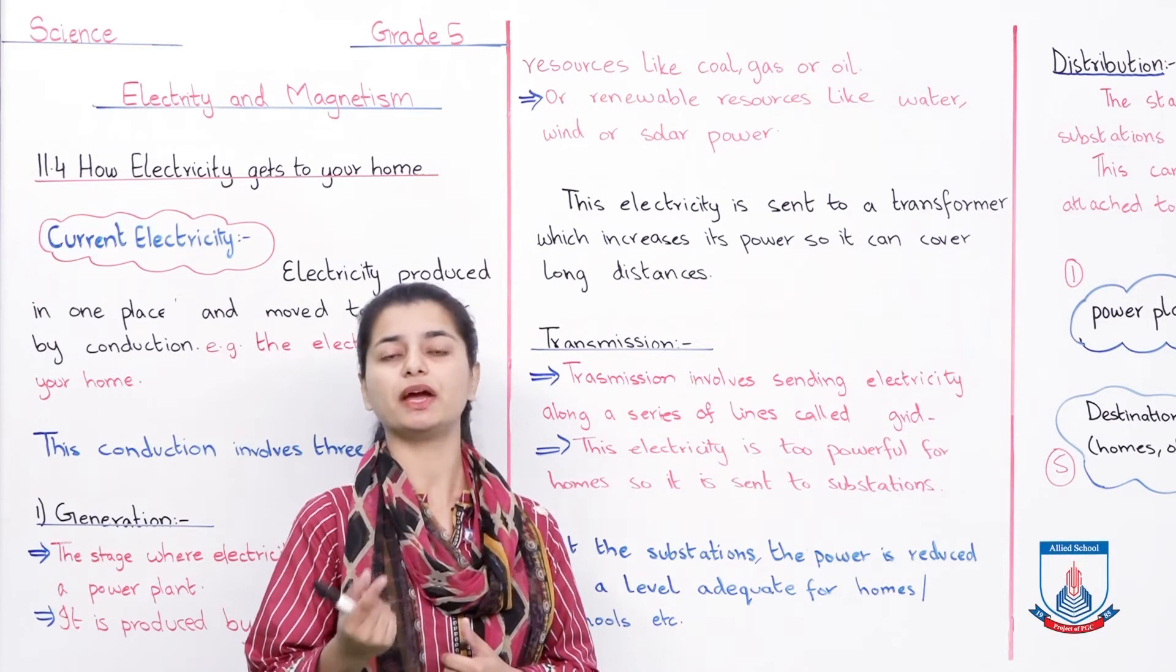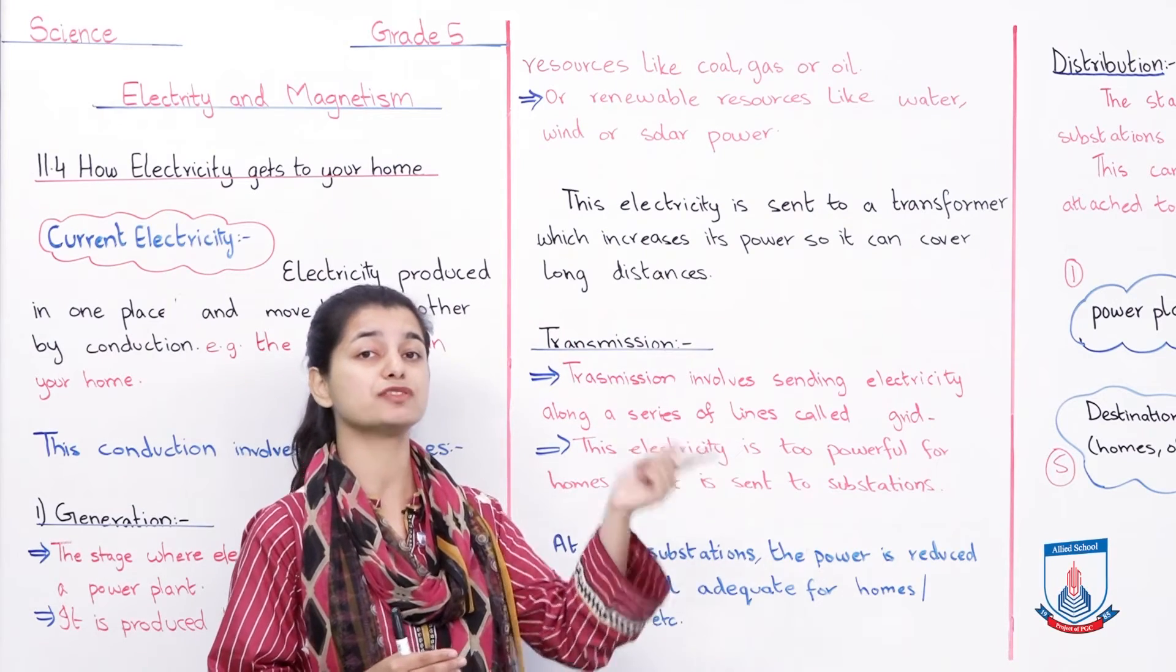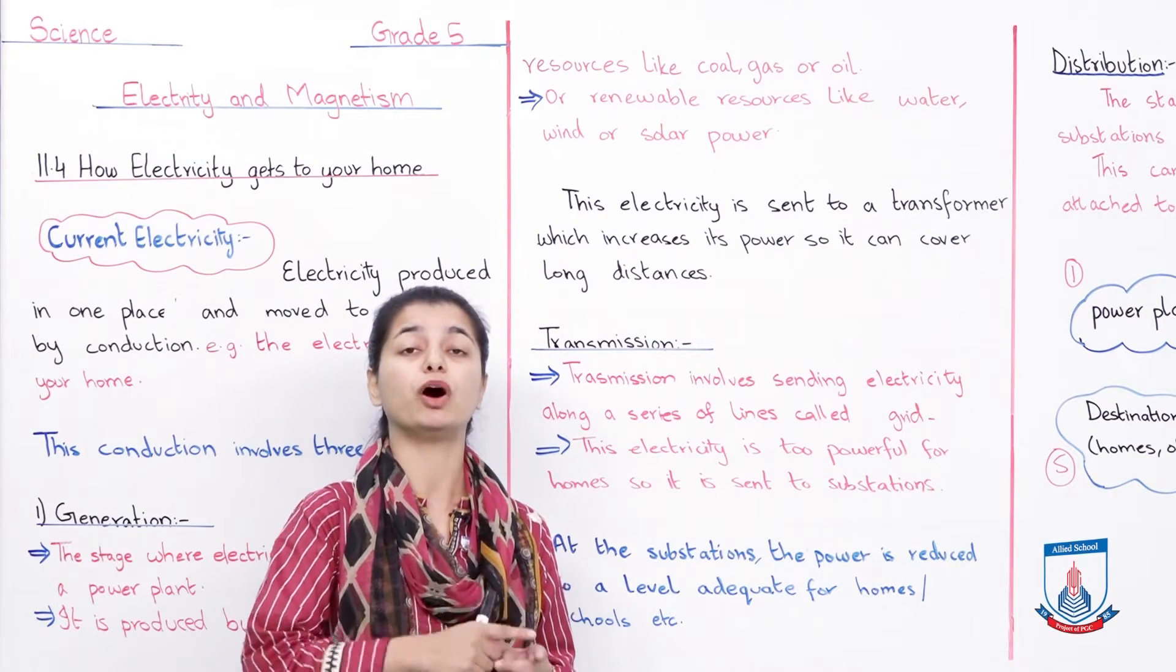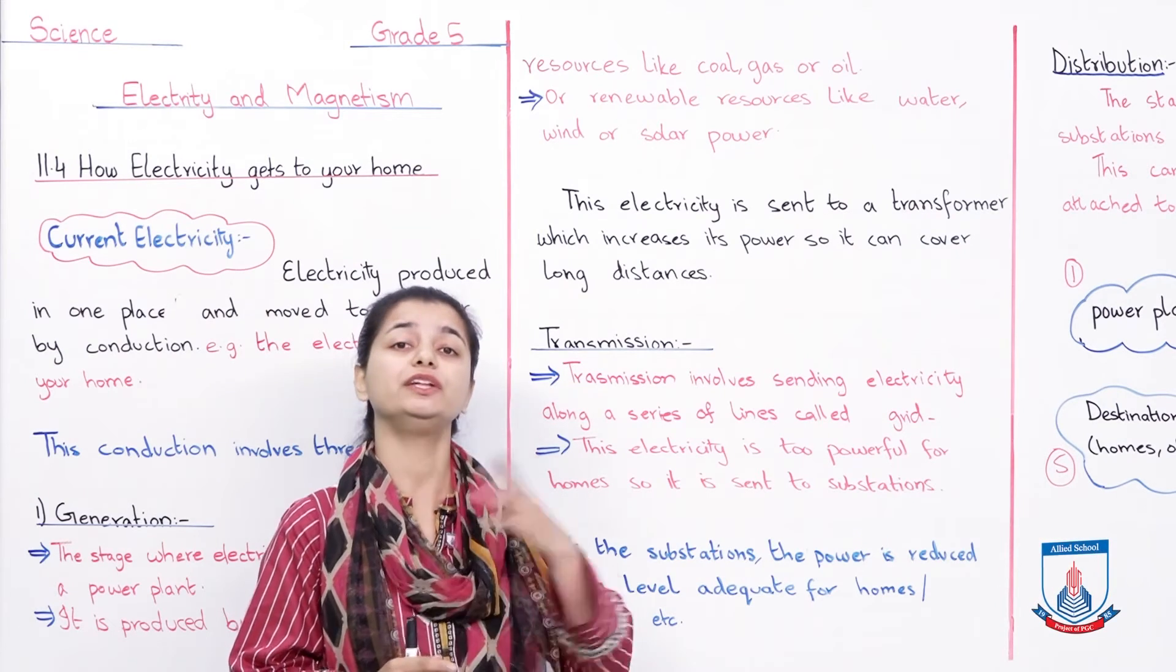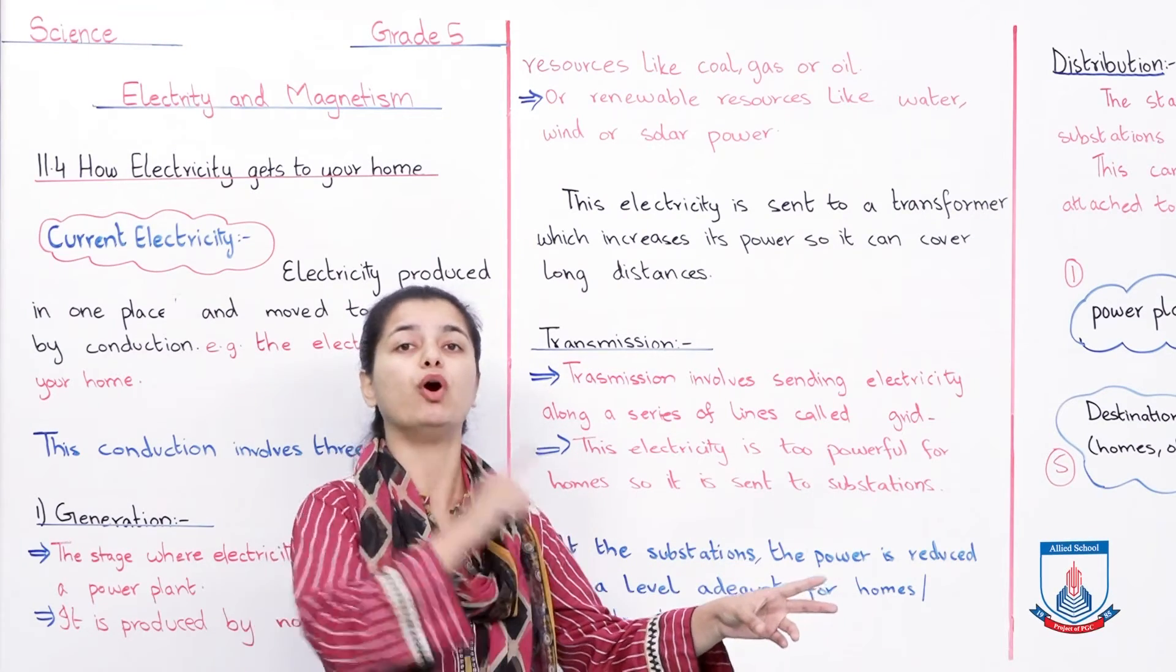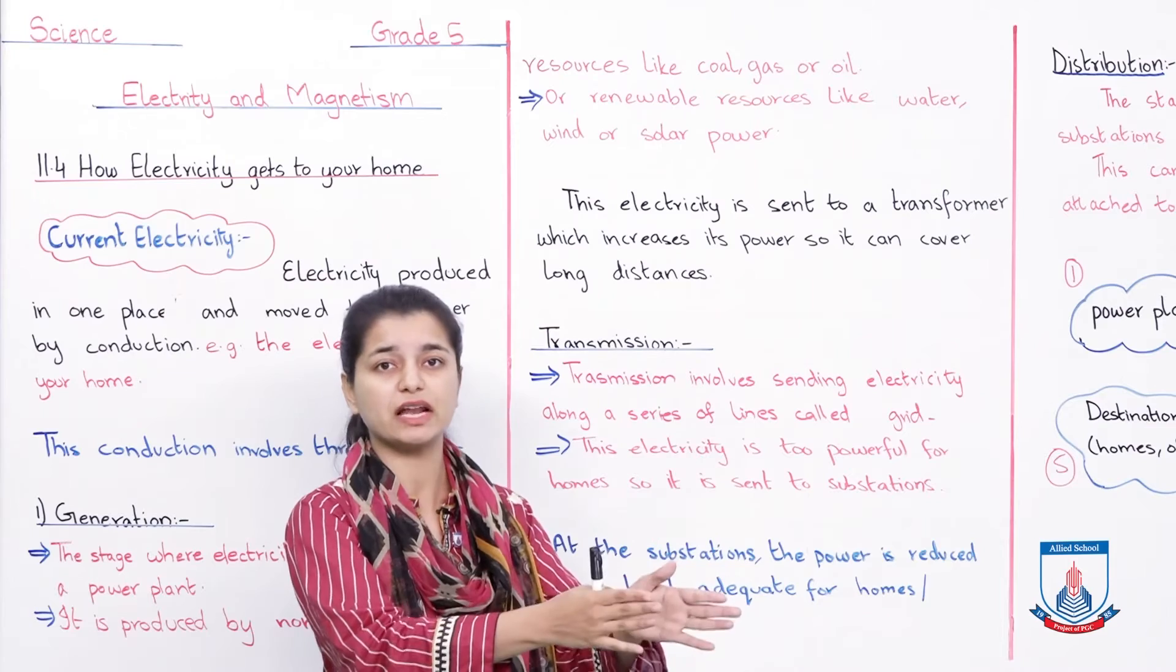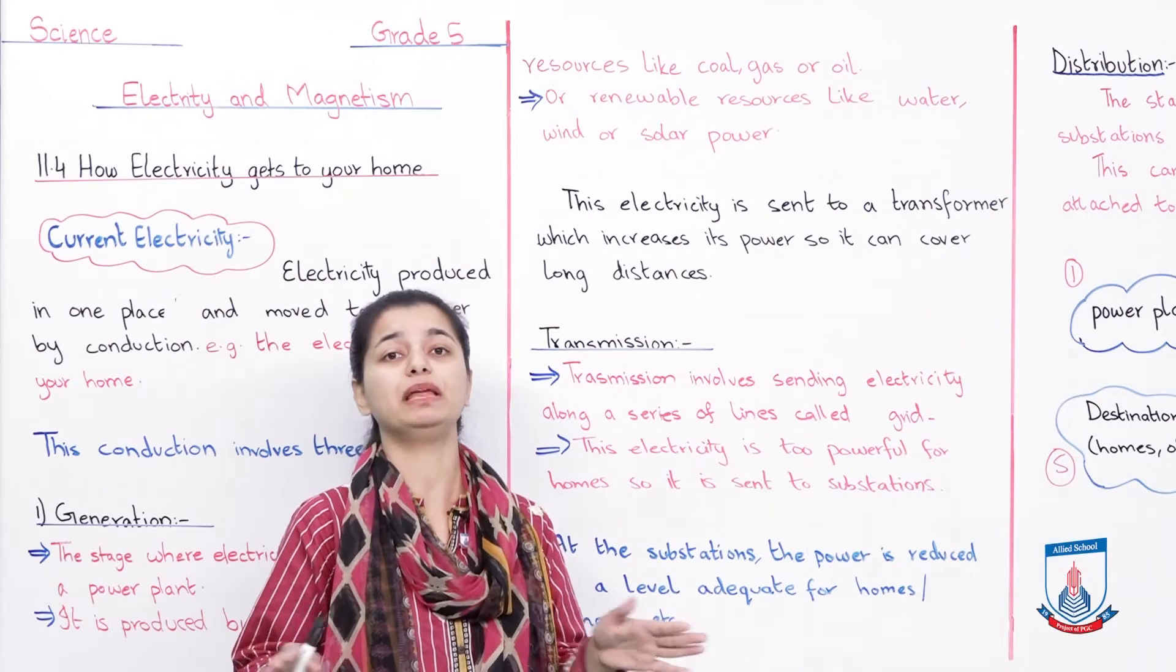Now the question arises - is it necessary to increase the power in the transformer if you're going to reduce it at substations? When you send electricity to the transformer, you want to increase the power because the power plant is not made everywhere. It is made very far from many areas. If a power plant is made far from Lahore, electricity needs to reach Lahore, so there's a transformer where electricity's power increases so it can reach far away.